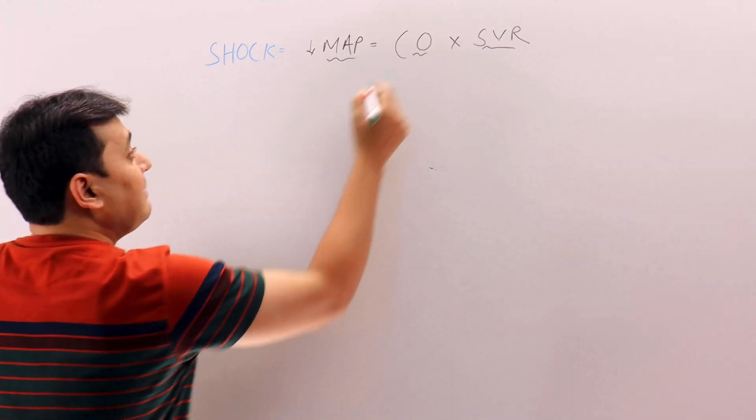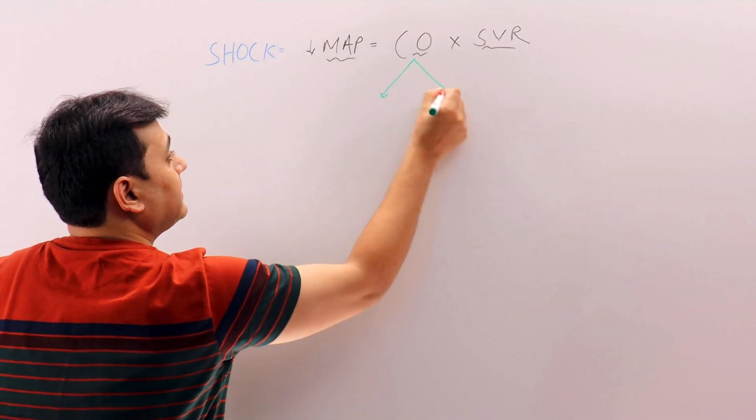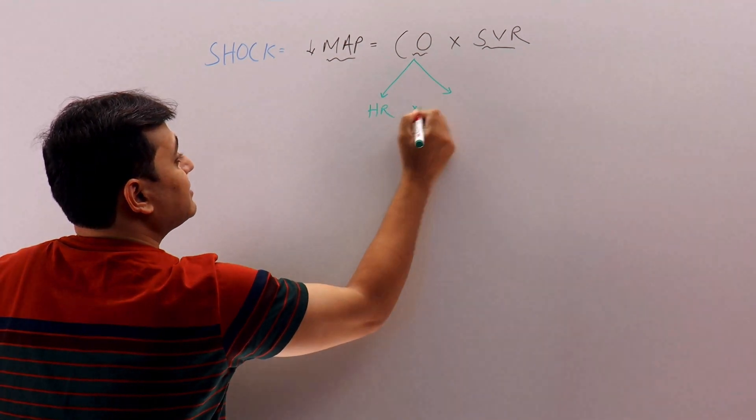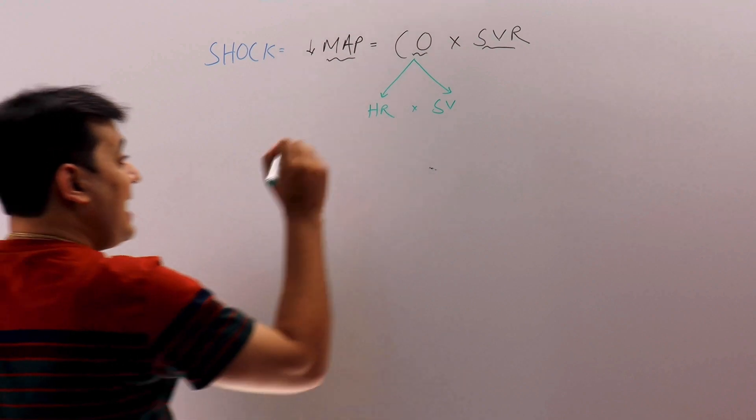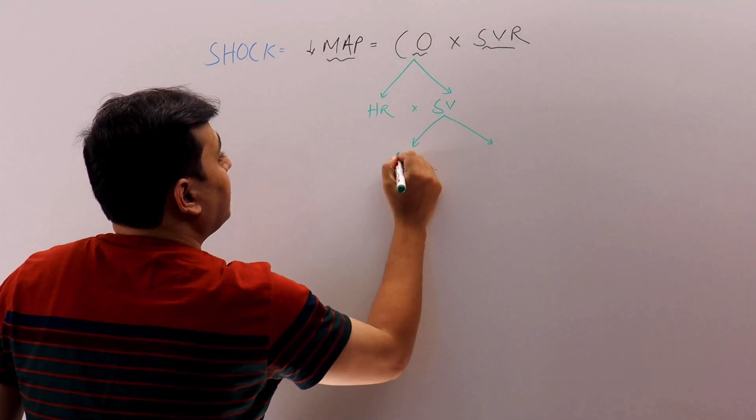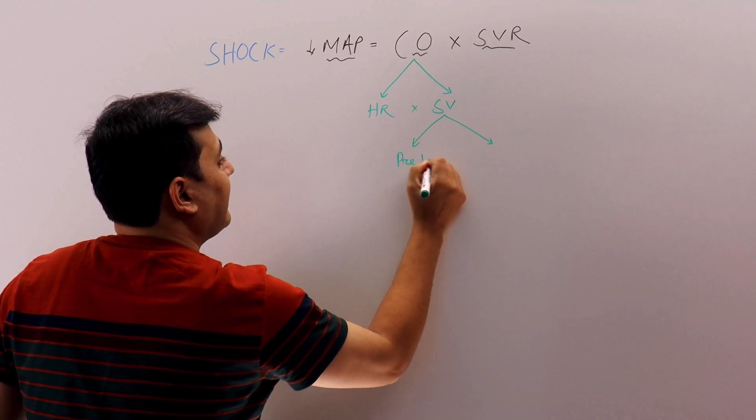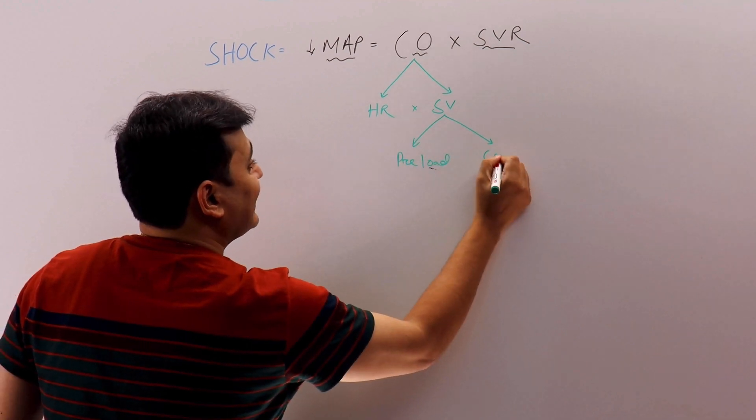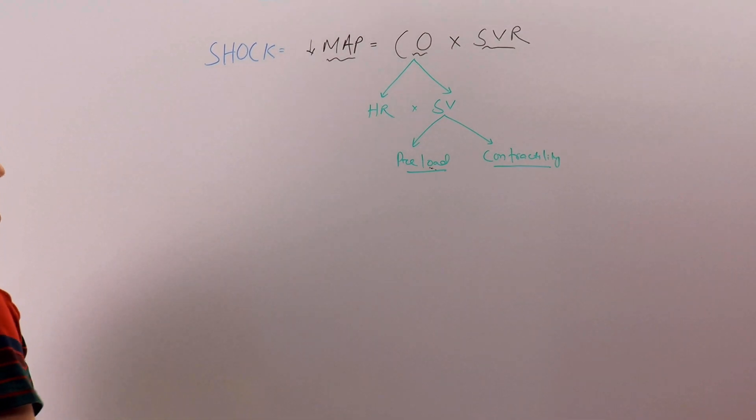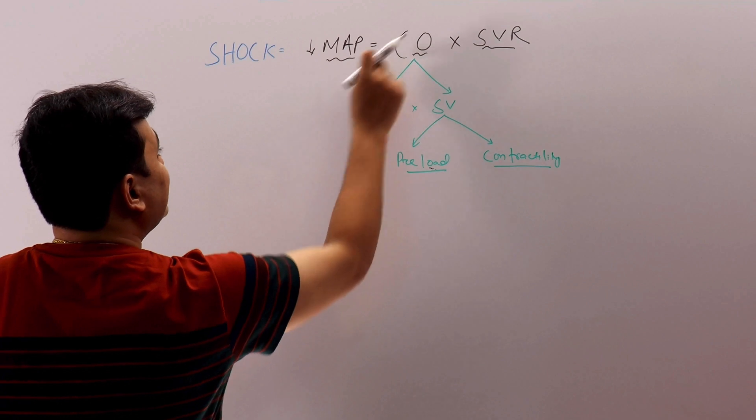So cardiac output can be divided as heart rate times stroke volume. And stroke volume is dependent upon preload and contractility. So there will be situations when the mean arterial pressure is down, that means either the cardiac output is down.